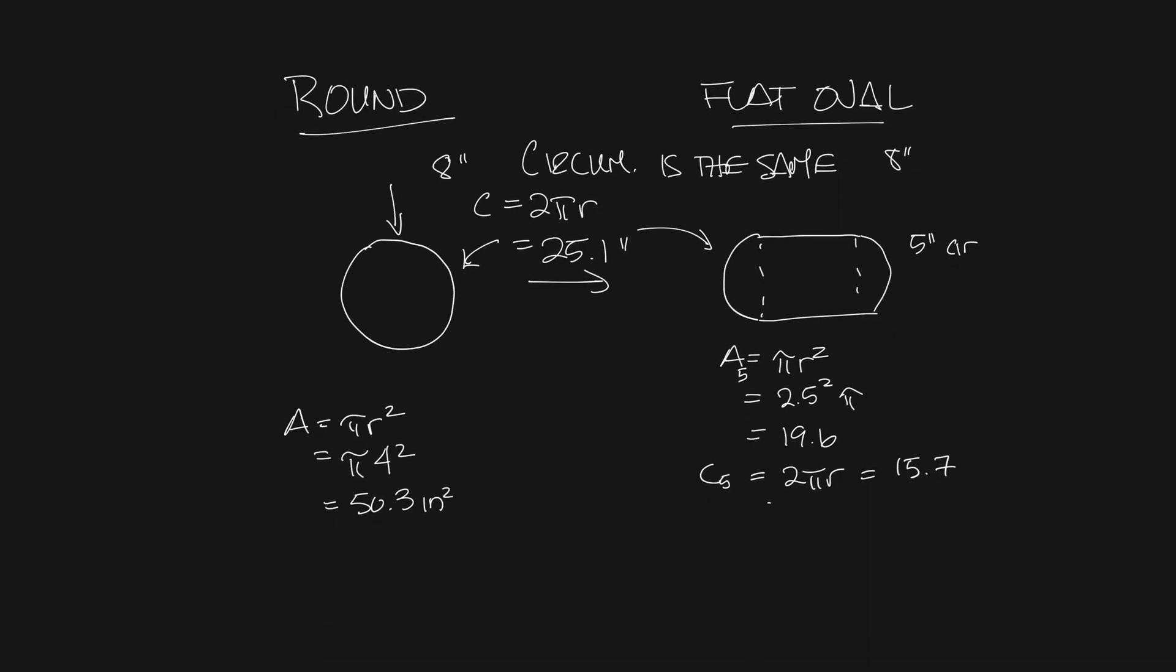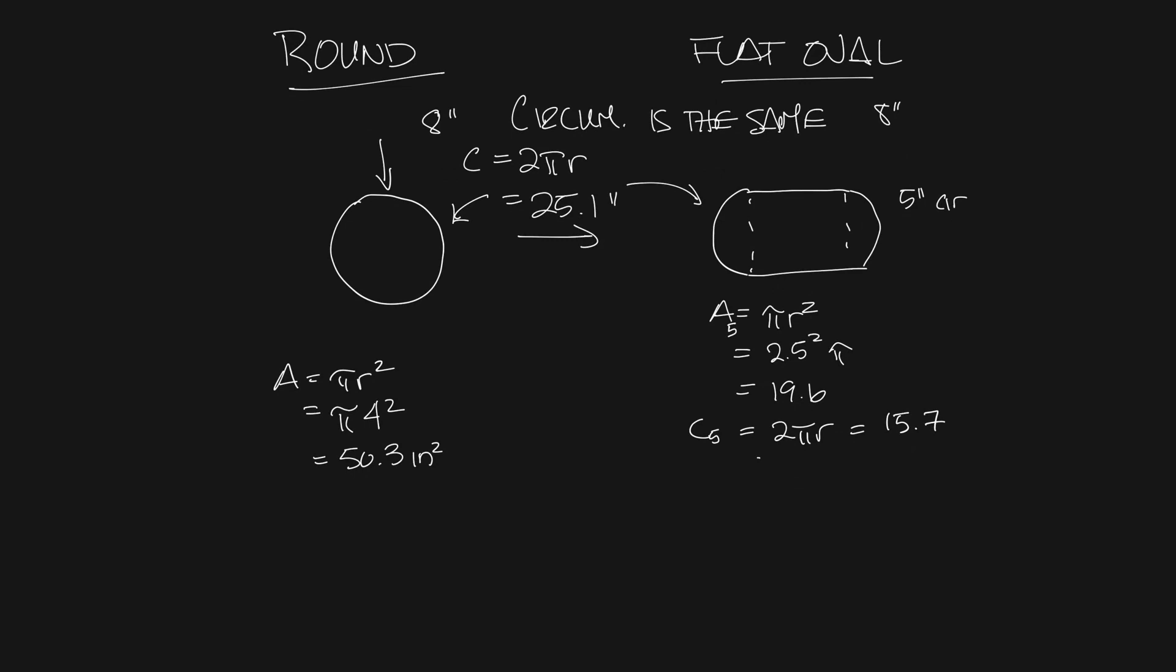So we know from earlier the circumference of the whole thing, and if we subtract the circumference of our 5 inch circle, then we can come up with what the sides are on this rectangle.